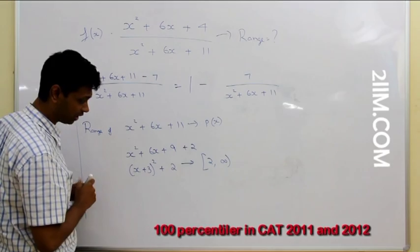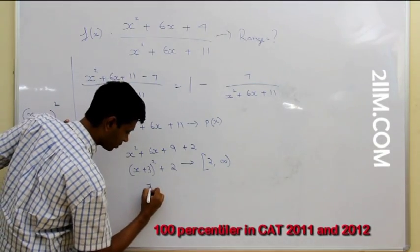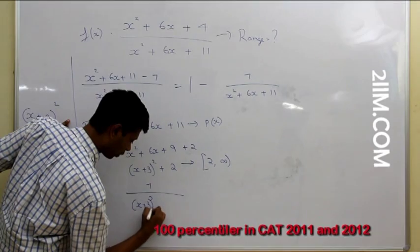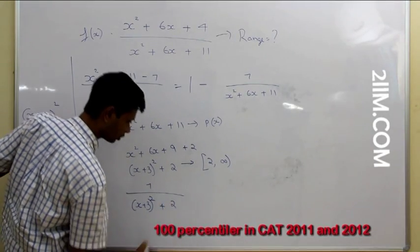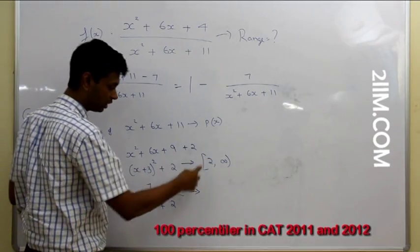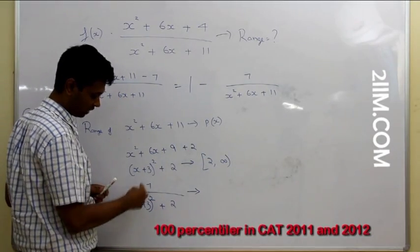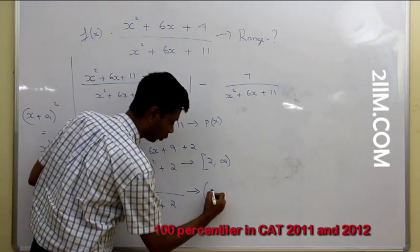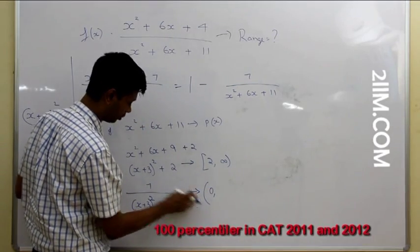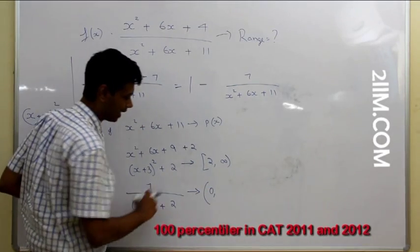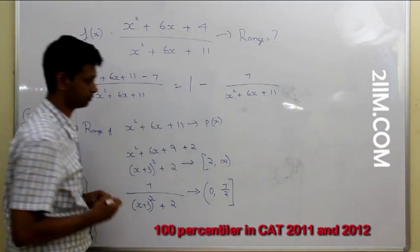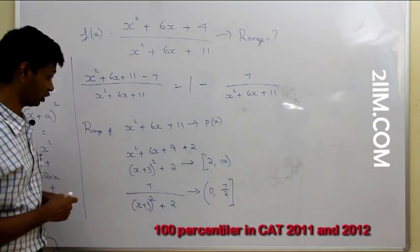Taking a slight leap, 7 / [(x+3)² + 2] will go from 0 to 7/2. Remember, 1/infinity is practically 0, so 7 times that gives a lower bound of 0. Note that 0 is not included because the denominator can never actually reach infinity. The upper bound is 7/2. This is the range of q(x) = 7 / [(x+3)² + 2].